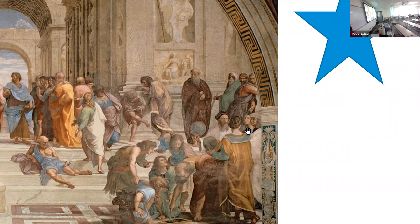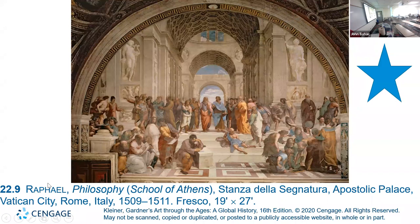This young guy kind of peeking around the corner — that is Raphael himself. He put himself in this painting. As a young man, you can see he's much younger than da Vinci and Michelangelo. There he is, just kind of looking back at the audience. This is the School of Athens, and it's in the Vatican.